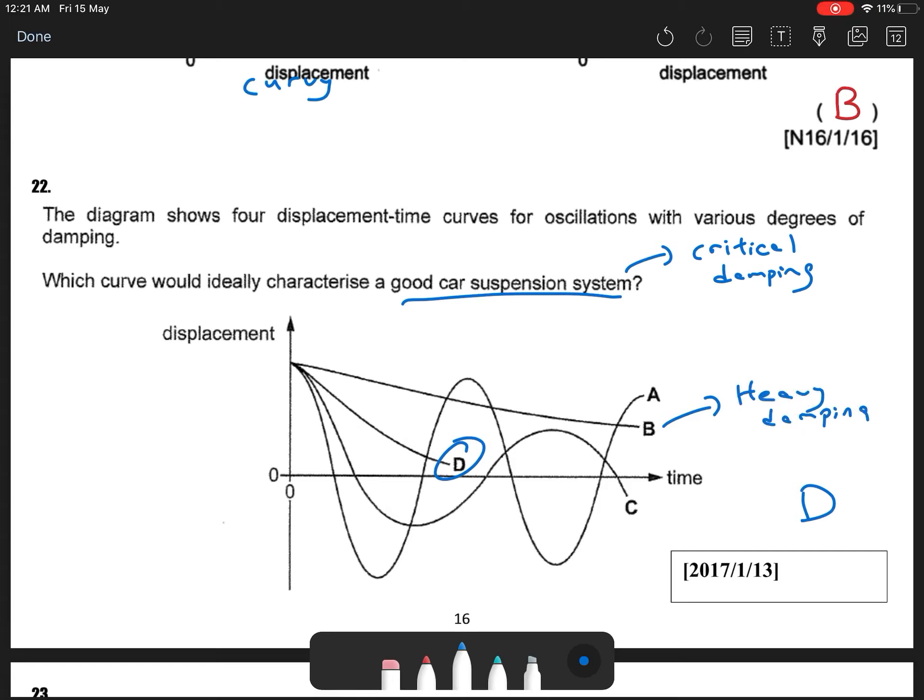So B is your heavy damping. Heavy damping, you can see it will go back to equilibrium in a very long possible time, right? Long time.